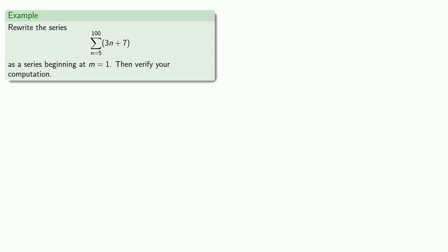So first of all, we know that the given series starts at n equals 5. Since we want the re-indexed series to start at m equals 1, then we have m is equal to n minus 4.